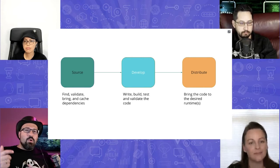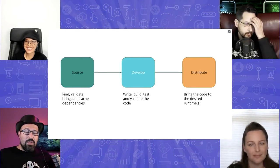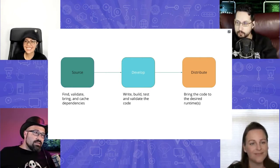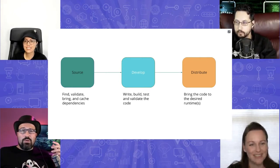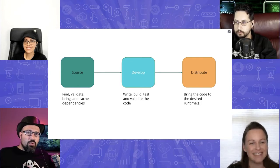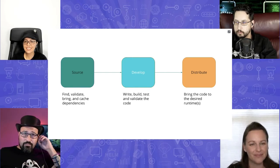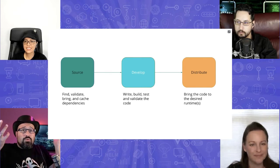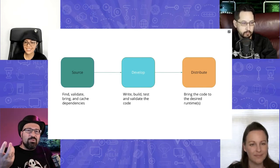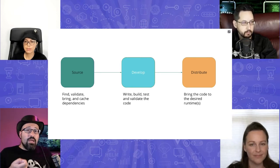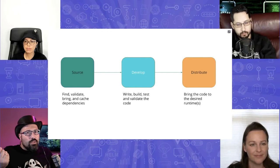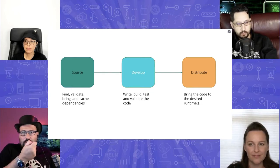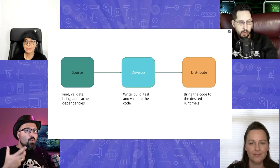The second step is the most trivial one — this is what we've done for years. We write code, build, and test. We use our build tools — Maven, Gradle, Bazel, whatever you use — compile the code, get jars, and start promoting them through quality gates in our pipelines. Then you have your artifacts ready to be distributed or ready to get to your users.